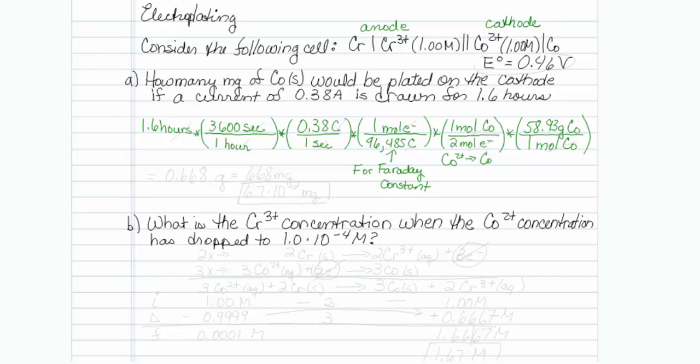Now this is incredibly long, but all the units cancel out to what we want. Hours cancel, seconds cancel, coulombs cancel, moles of electron cancel, and moles of cobalt cancel. So when I multiply all this out, I should be left with some answer in grams, which I can easily convert to milligrams. And I get 0.668 grams, which if I multiply it by a thousand, will give me 668 milligrams. And please note that this would only be good to 2 sig figs, so technically 6.7 times 10 to the second milligrams should be my answer.